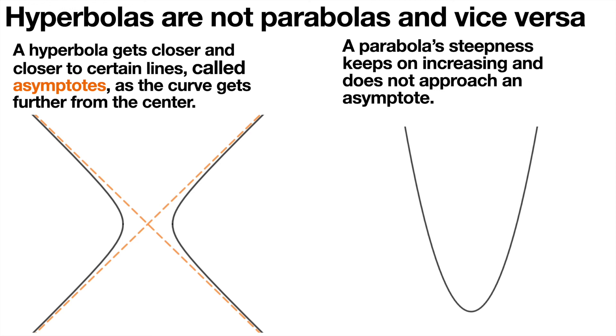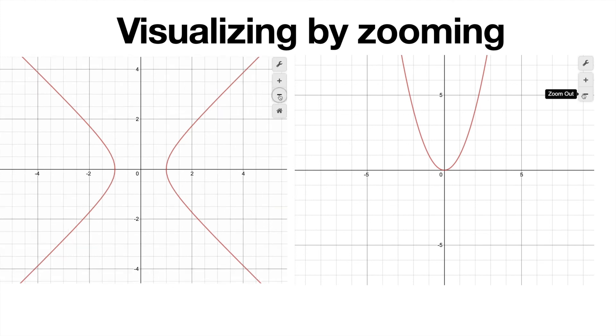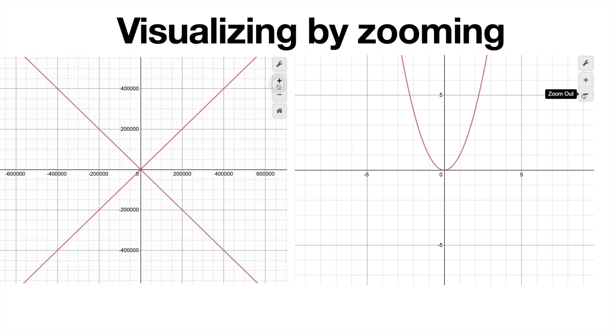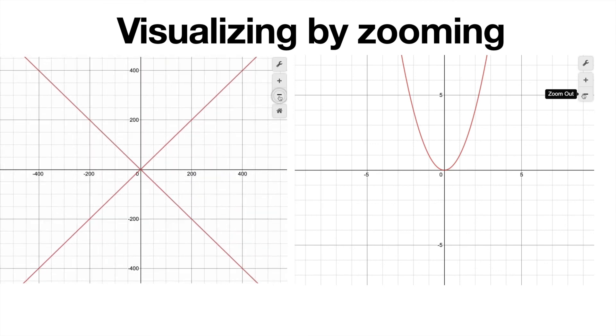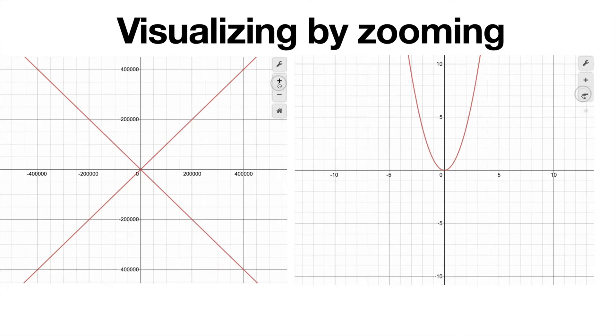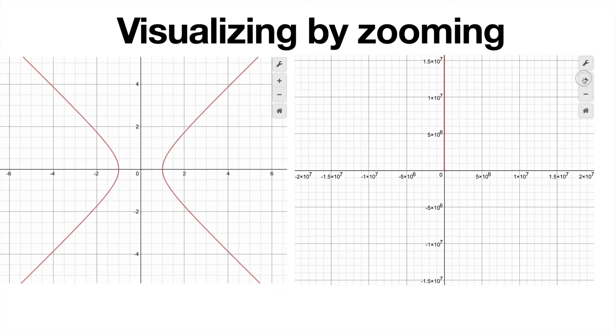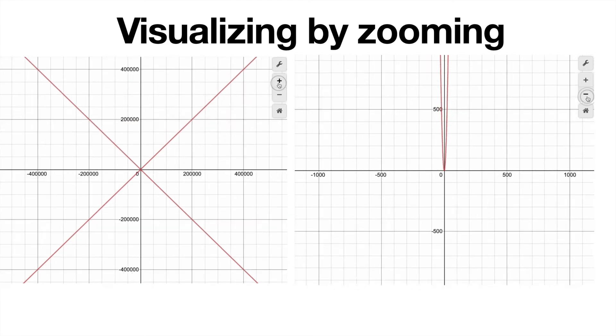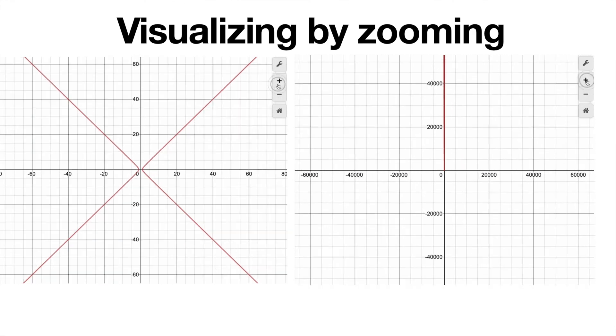But one way to show this intuitively is that if you zoom out on a hyperbola, then you really see that it becomes two pairs of lines dictated by the formula that we suggested. And if we zoom out on a parabola, it seems to get steeper and steeper until it looks like a vertical line. But we know it can't be a vertical line because in the middle there isn't a vertical line.